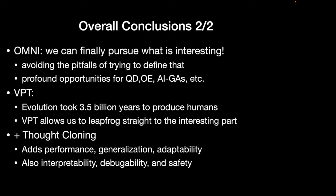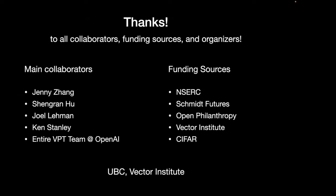In particular, OMNI finally lets us pursue only what is interesting in our algorithms — with profound implications for quality-diversity, open-endedness, and AIGAs. VPT enables pre-training so our agents start out really smart, essentially skipping 3.5 billion years of evolution to get right to the good part with open-ended agents doing fascinating things starting from human knowledge. And thought cloning lets agents think in our language, giving them better performance and generalization, while also allowing us to watch them think, know what they're planning, and intervene for safety. I want to thank my collaborators at UBC, Joel and Ken, all the people at OpenAI, the funding sources, and the organizers.